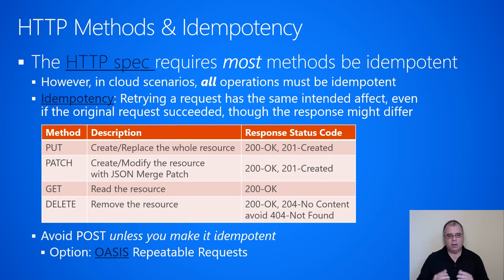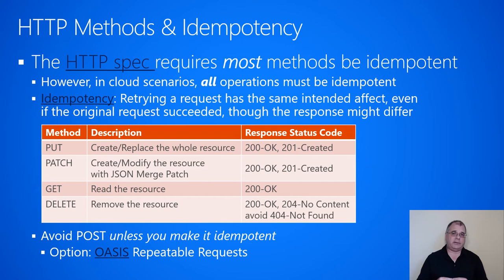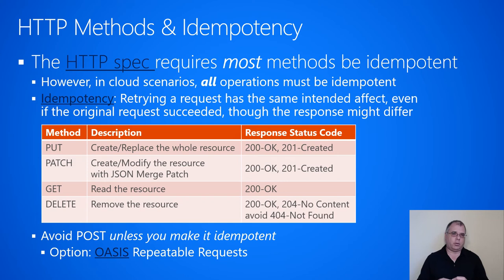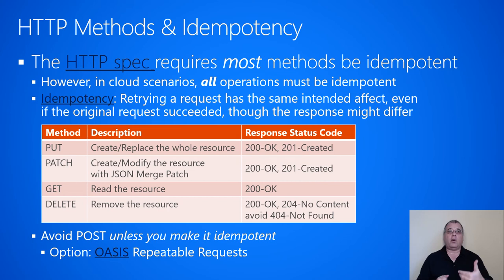One method not in the table is the HTTP POST method. POST is typically not idempotent, and therefore not well suited for cloud environments where we're embracing failure. Our recommendation is to avoid POST unless you make it idempotent in some way. One technique is to use OASIS Repeatable Requests — a document describing special headers you can add to POST requests to get repeatable requests for retries without performing the same operation multiple times. But implementing this on a service is harder than using PUT, PATCH, GET, and DELETE, and it's harder for the customer to use POST as well. You will be much better off avoiding POST as much as possible.